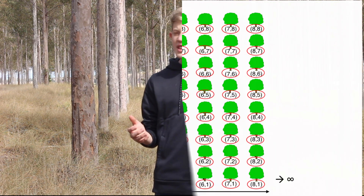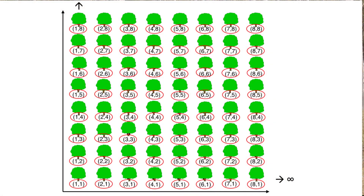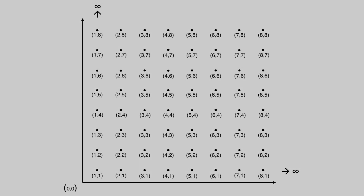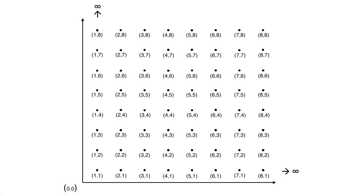Say you're standing at the origin of an infinite orchard. You can think of the trees as mathematically small lattice points on a grid, which align cardinally with north, south, east and west. So, if you look randomly in any single direction, what is the probability that you would see a tree?